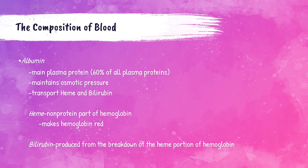Albumin is a transport protein that transports heme and bilirubin, and also helps to maintain osmotic pressure. Heme is the non-protein part of hemoglobin — it's the molecule that makes hemoglobin red. Bilirubin is produced from the normal breakdown of the heme portion of the hemoglobin molecule; we'll be discussing bilirubin a lot in clinical chemistry.